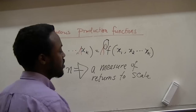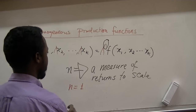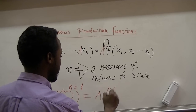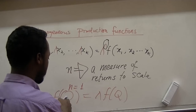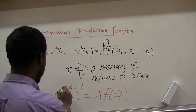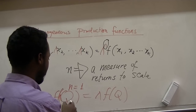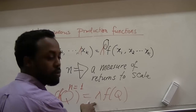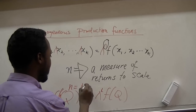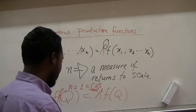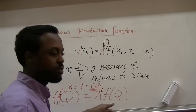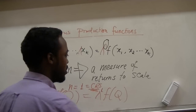Let's say n is equal to 1. This simply means f(λq) = λ·f(q) — if the inputs are multiplied by lambda then the outputs are also multiplied by lambda. That is basically what n equal to 1 means, which gives us constant returns to scale. Simply, if we double the inputs we are getting double the outputs — doubling inputs gives us twice as much output as we had before.